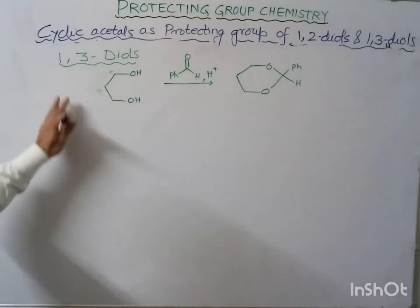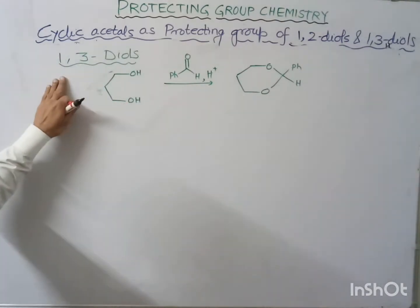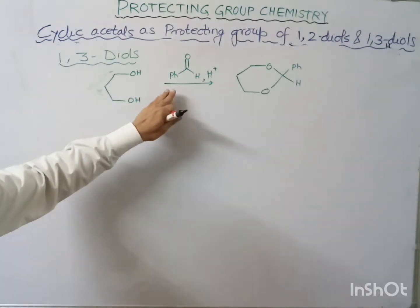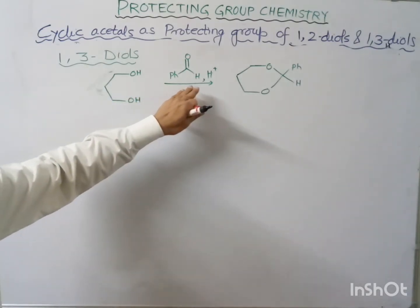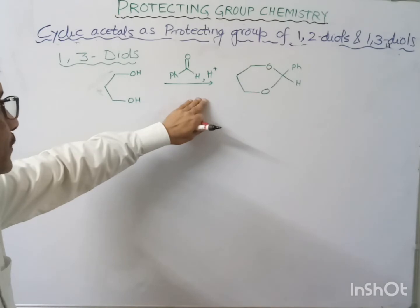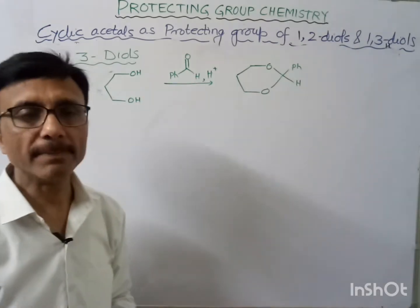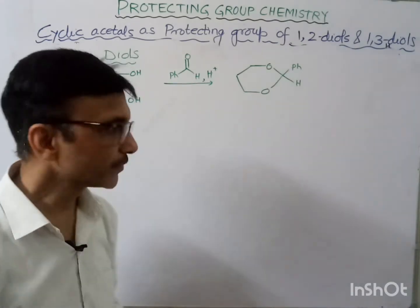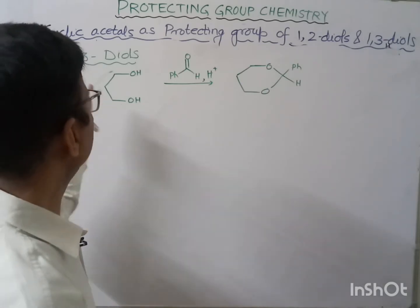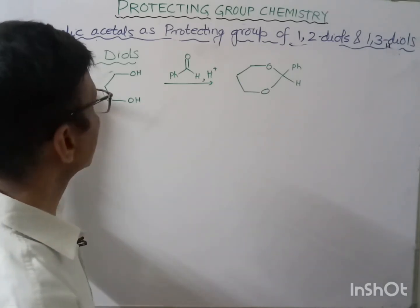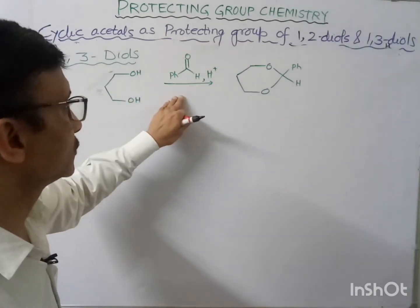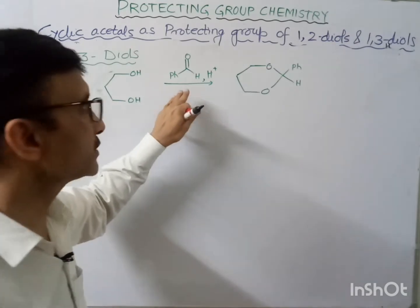Now in 1,2-diol, we used acetone in the presence of an acid catalyst. Here we are using benzaldehyde. So what is the reason that in 1,3-diol we are using benzaldehyde and not acetone? Let's discuss this.